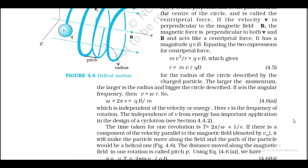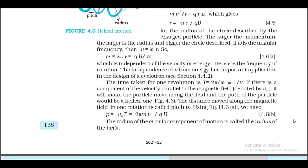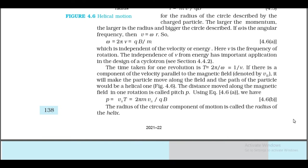Here ν is the frequency of rotation. The independence of ν from energy has an important application in the design of a cyclotron. The time taken for one revolution is T = 2π/ω = 1/ν. If there is a component of velocity parallel to the magnetic field, denoted v‖, the particle moves along the field and the path would be helical. The distance moved along the magnetic field in one rotation is called the pitch p. Using equation 4.6, p = v‖T = 2πmv‖/(qB). The radius of the circular component of motion is called the radius of the helix.